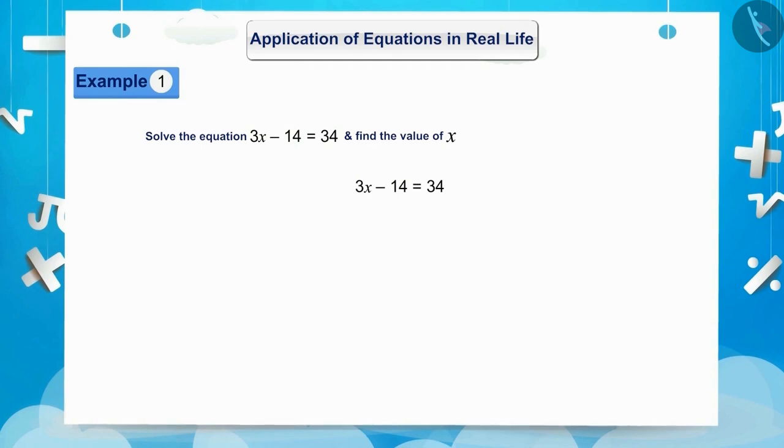In the given equation, the variable x, that is 3x, is in the LHS. From which, 14 is being subtracted. After transposing 14 to the RHS, it will be added to 34.